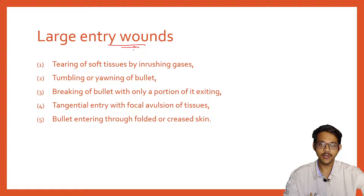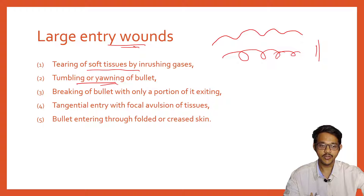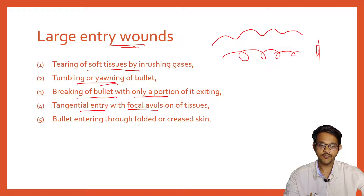Sometimes entry wounds appear larger than the size of the bullet due to: tearing of soft tissues by in-rushing gases; tumbling or yawing of the bullet — where the bullet travels in a wave form or tumbles as it enters, entering longitudinally rather than vertically; or a bullet breaking with only a portion exiting. Tangential entry causing focal aversion of tissues, or a bullet entering folded or creased skin, may also cause larger entry wounds.